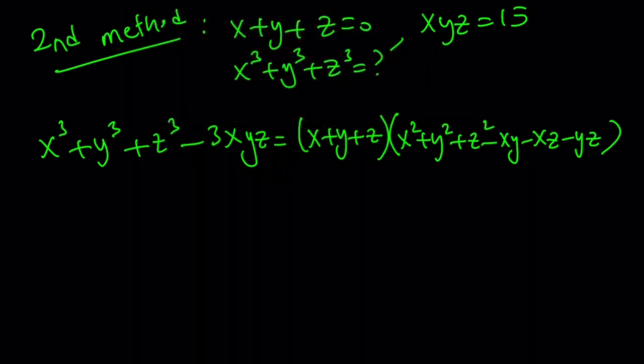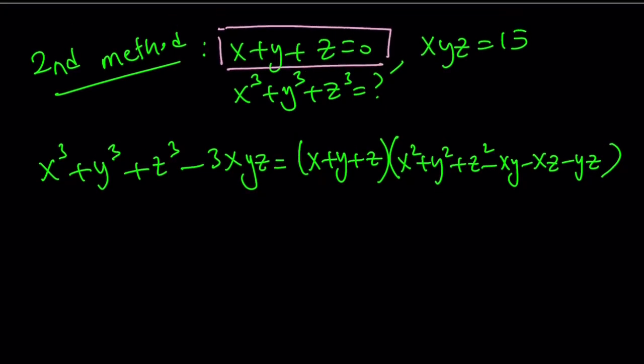We're interested in the following. We know that x plus y plus z is equal to 0, and we're trying to find the sum of the cubes. So if this is 0, everything on the left-hand side becomes 0. So we can say that x cubed plus y cubed plus z cubed minus 3xyz is equal to 0 if x plus y plus z is equal to 0.